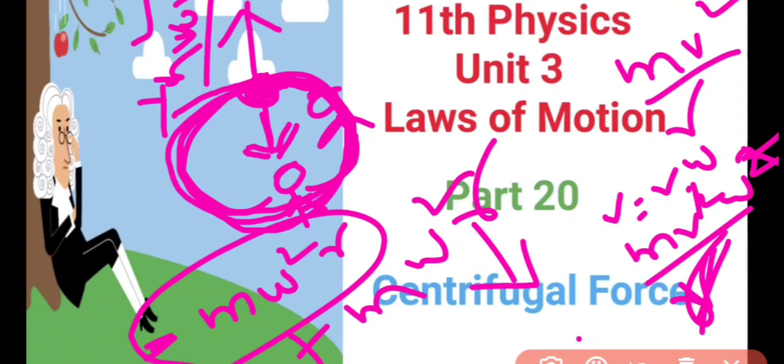So in the pseudo force sense, when we are in the rotating frame, we say this outward force is the centrifugal force. Actually, it arises because we are analyzing from a rotating frame. That is why it is called pseudo force or false force. When solving problems in circular motion in a rotating frame, we must include this centrifugal force.